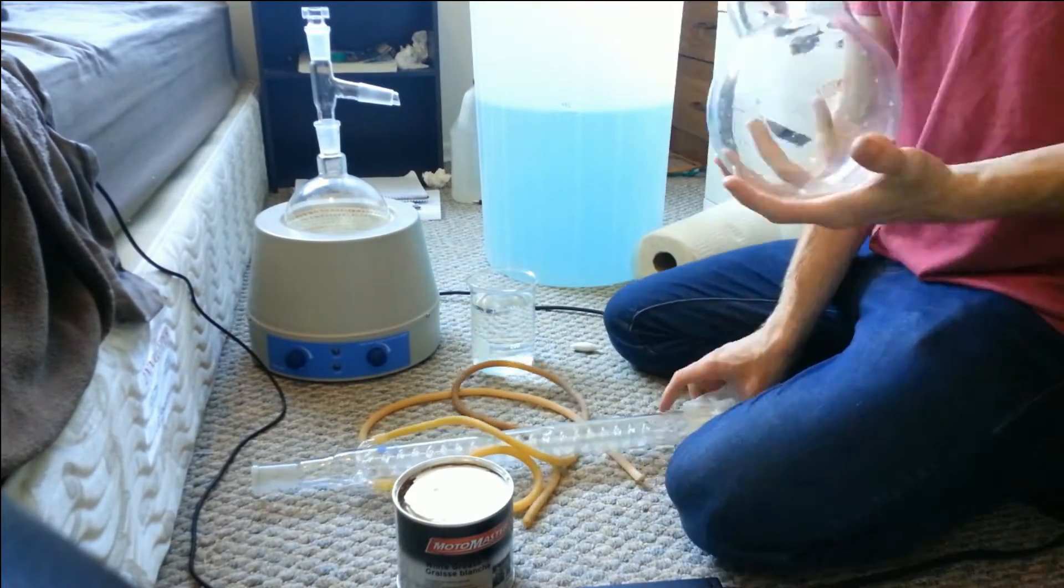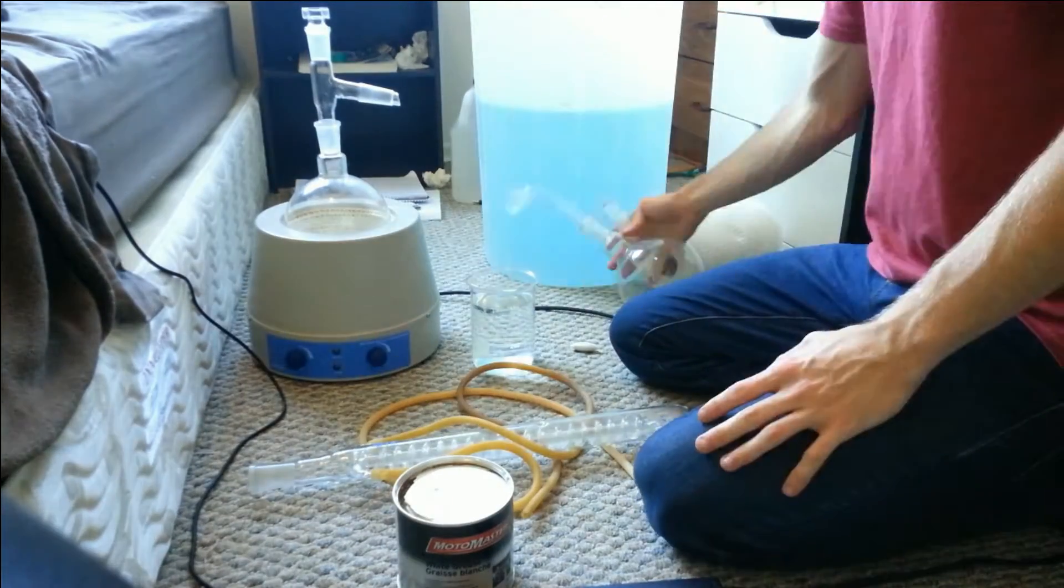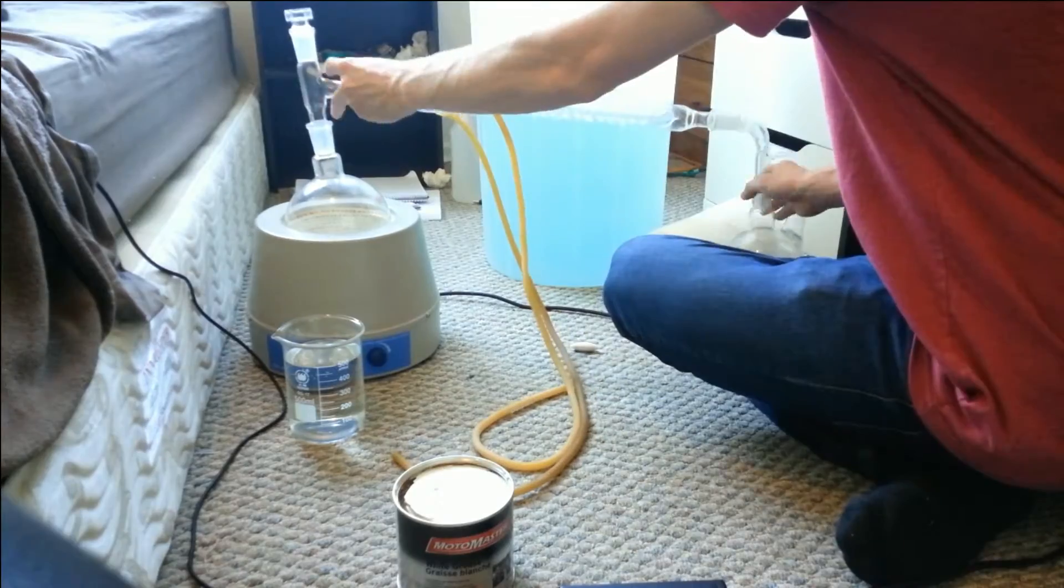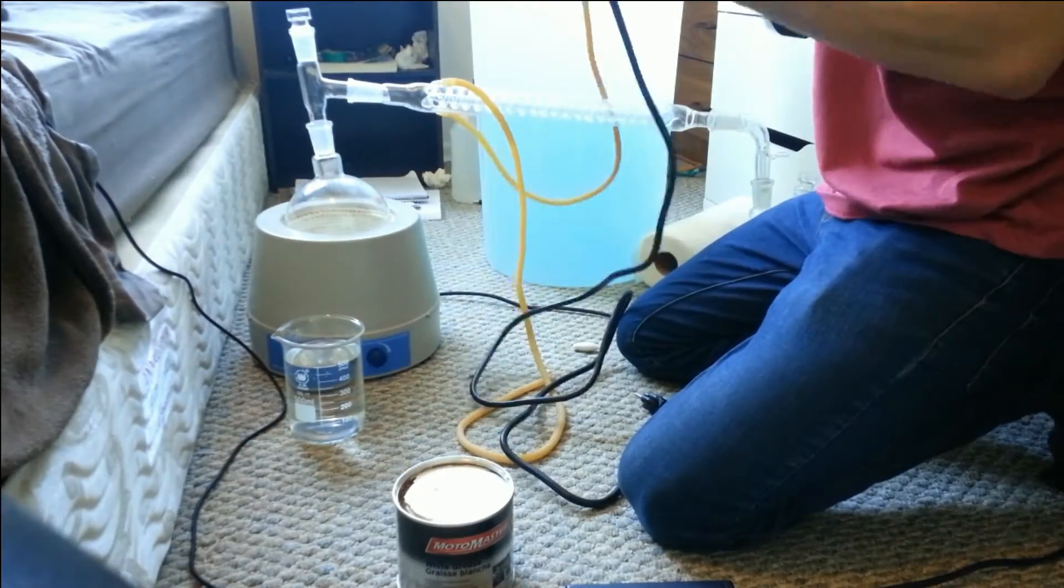The stuff you want to evaporate is going to go into the heating mantle, into that round bottom flask. The other one, put away from it where you want to collect the solution you're boiling away.